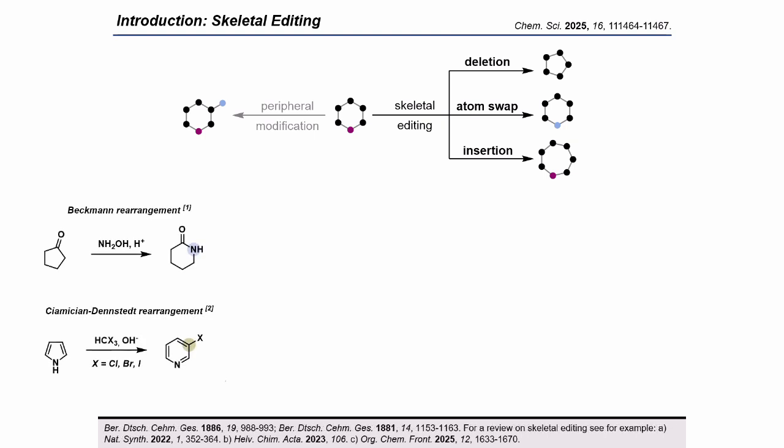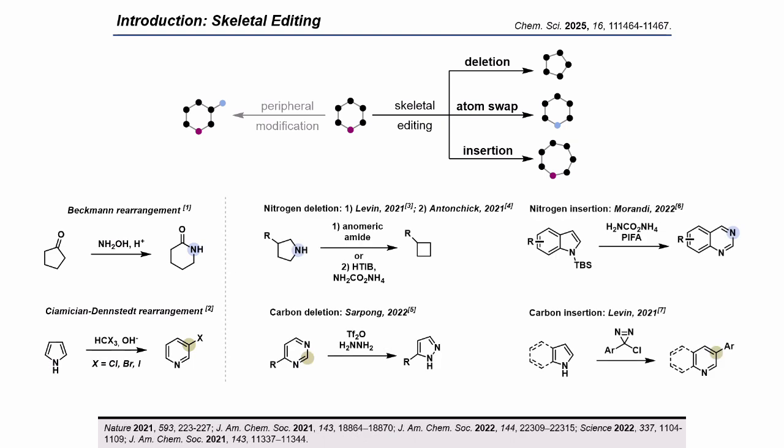While the term has only been defined recently, reactions that can be considered as skeletal editing have been known since the late 19th century. Classical examples include the Beckmann rearrangement or the Chami-Chan-Denstead rearrangement. Several protocols have been developed over the past five years, including nitrogen atom insertions, nitrogen deletions, carbon insertions, and carbon deletions.